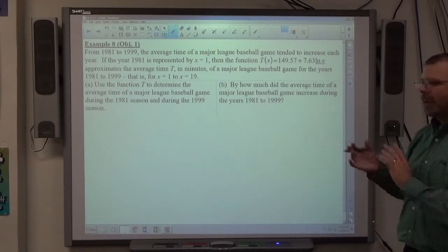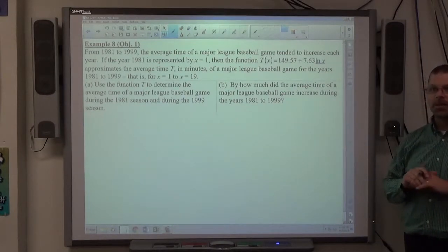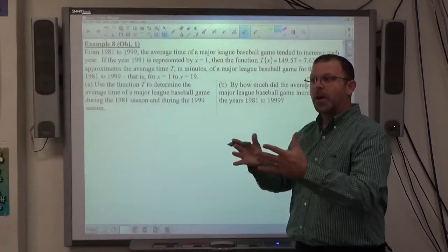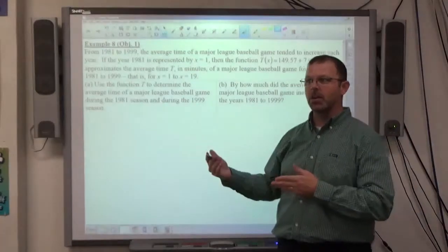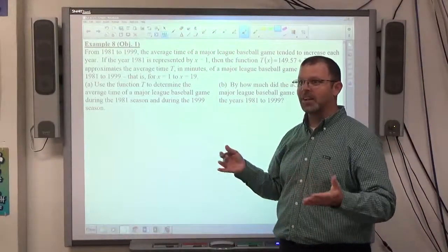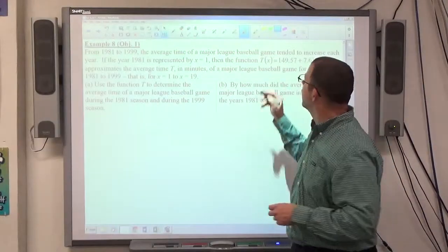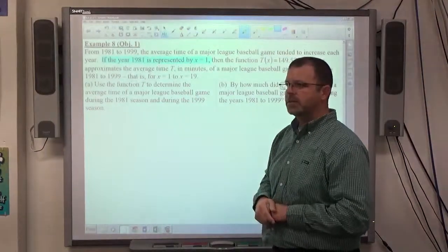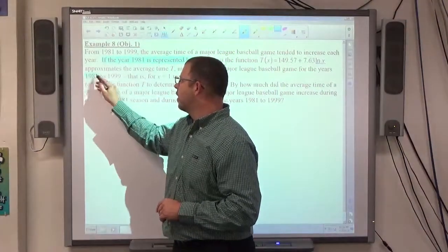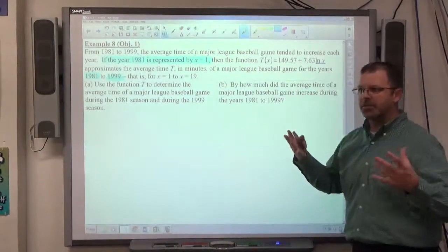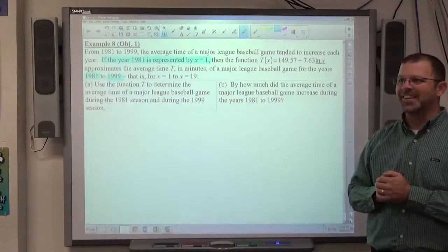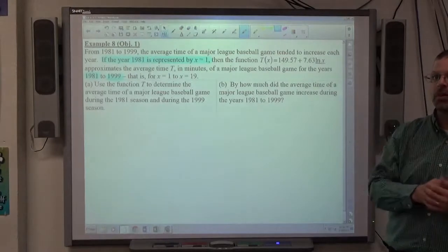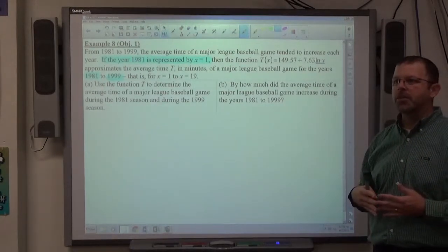That is for x equals 1 to 19. A lot of stuff is happening in that statement that's going to happen in a lot of problems that I want you to get comfortable with. When you're dealing with years like 1981, 1999, 2015, whatever year we're in, they're representing the year they're starting with as x equals 1. So 1981 means x equals 1, 1999 is x equals 19. Instead of having to make some function with a minus 1980 in it, they can just represent this function based on this pattern, based on year 1, year 2, year 3, and so on. They do that quite often, so be comfortable with that.